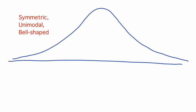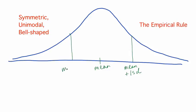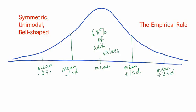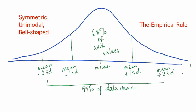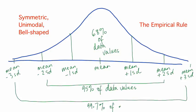For data with a bell shape, the standard deviation is an important measure of spread or variability. The empirical rule tells us how the frequency of data values is related to the standard deviation. In particular, approximately 68% of the data values are within the range from the mean minus one standard deviation to the mean plus one standard deviation. About 95% of data values are within the mean plus or minus two standard deviations, and 99.7% — almost all of the data values — are within three standard deviations of the mean.